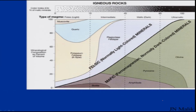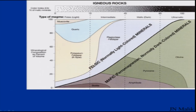Looking at the type of magmas, we have felsic which is light, intermediate, mafic which is darker, and ultramafic. Felsic minerals are normally lighter-colored and ferromagnesian minerals are normally darker-colored. The darker-colored mineral group includes olivine, pyroxene, amphibole, and biotite, whereas lighter ones are potash feldspar, plagioclase, quartz, and muscovite.